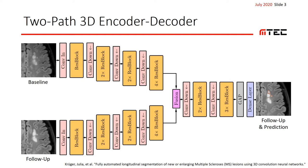We had the idea: what if we actually use more than one baseline scan? A typical MS patient will have a lot of scans taken. Can we also make use of all those scans acquired even further back? Intuitively, this could provide a more extended and consistent baseline for differentiating between old and new lesion material in the current follow-up scan. Of course, this also means that we do not process 3D volumes, but 4D spatiotemporal sequences instead, which represents a significant challenge.